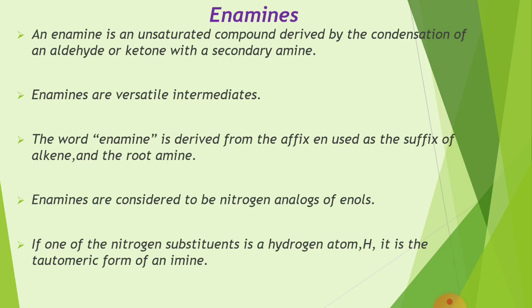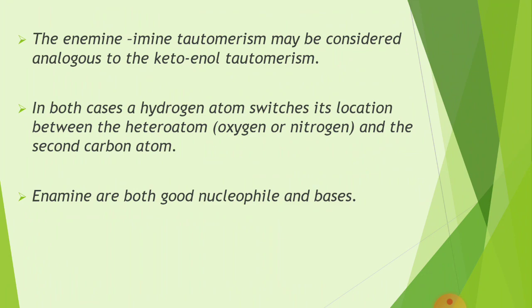The enamine and imine tautomerism may be considered analogous to keto-enol tautomerism. Just as keto-enol tautomerism exists, enamine-imine tautomerism exists in an analogous way. In both cases, a hydrogen atom switches its location between the heteroatom (oxygen or nitrogen) and the second carbon atom.